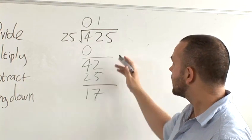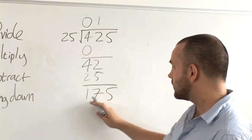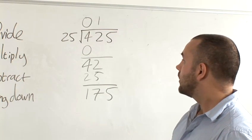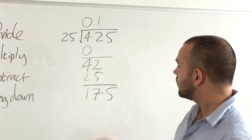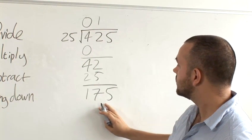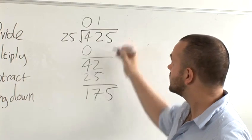And finally, bring down the last number, 175. Finally, we do the last thing again. How many times will 25 go into 175? It will go in seven times.